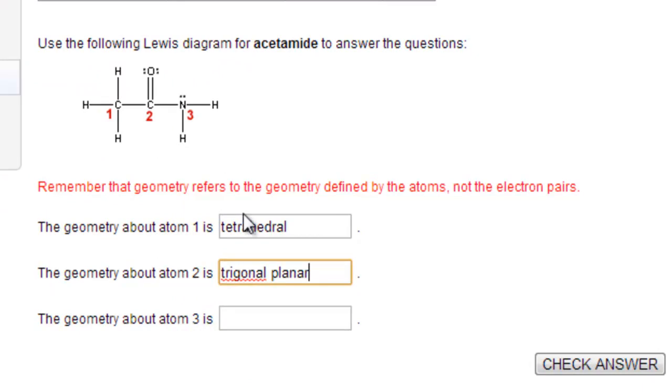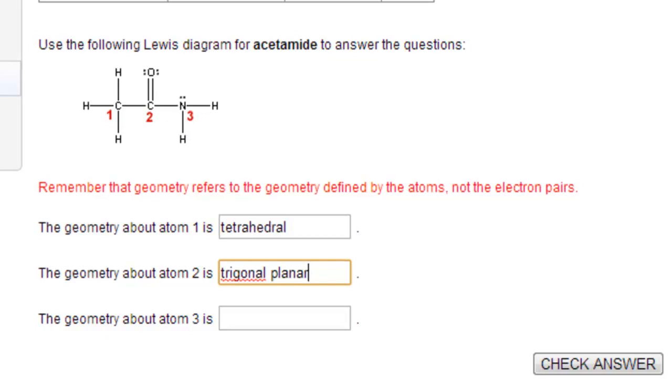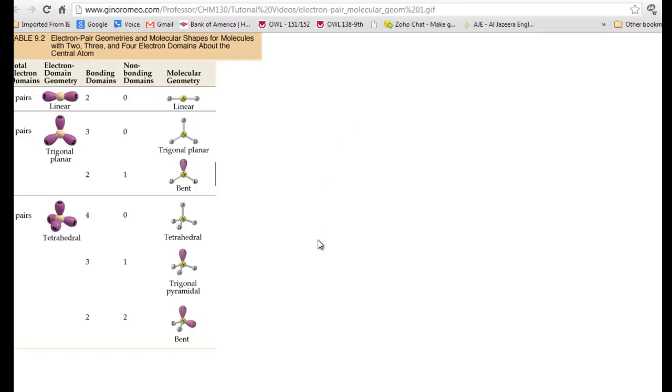For atom number three, which is the nitrogen, three single bonds and one lone pair. If you look at the green sheet, there's one single bond and three links or bonding domains as they call them sometimes. The molecular geometry would be trigonal pyramidal.